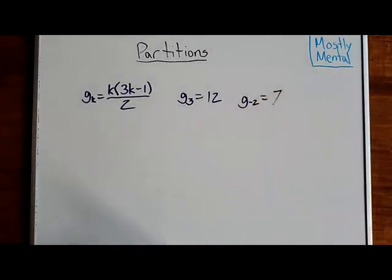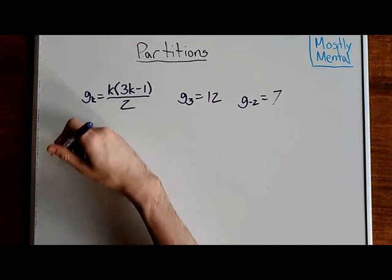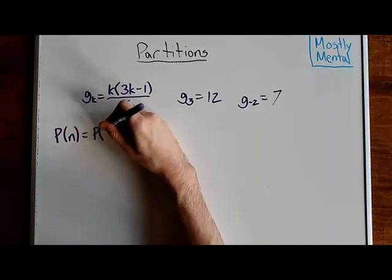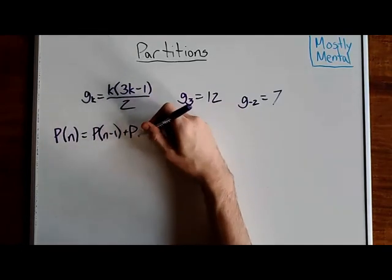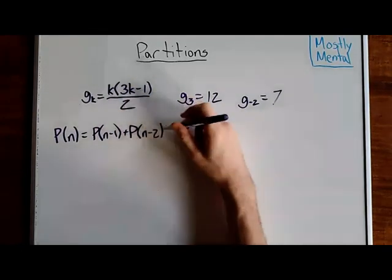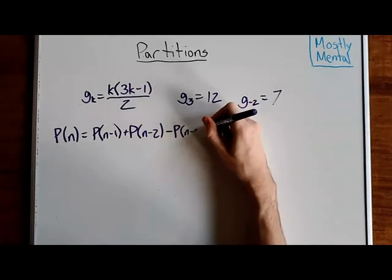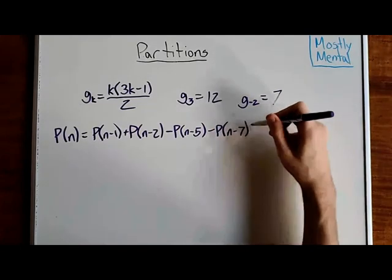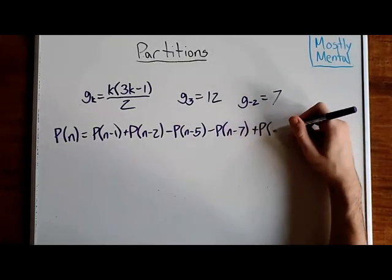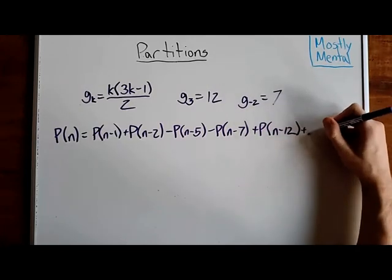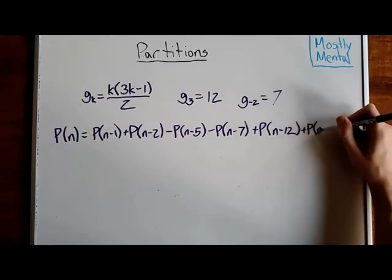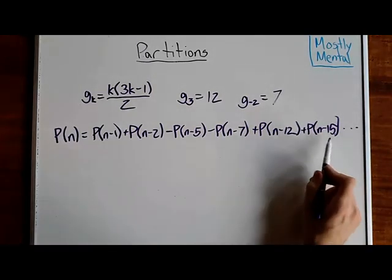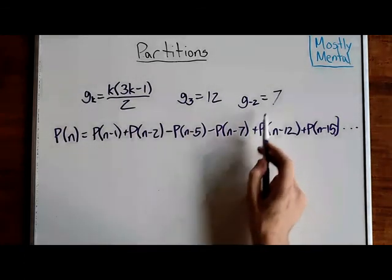And for partitions, Euler showed that p of n is p of n minus 1 plus p of n minus 2 minus p of n minus 5 minus p of n minus 7 plus p of n minus 12 plus p of n minus 15, and so on. Where all of these numbers here are the pentagonal numbers.